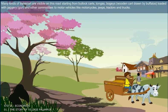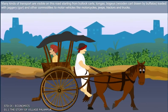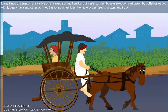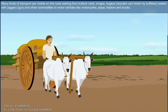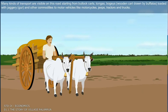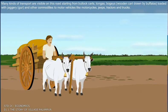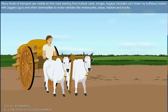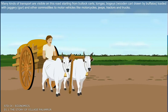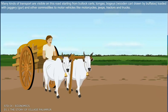Many kinds of transport are visible on this road, starting from bullock carts, tangas, bogies, wooden carts drawn by buffaloes loaded with jaggery, gur and other commodities, to motor vehicles like motorcycles, jeeps, tractors and trucks.